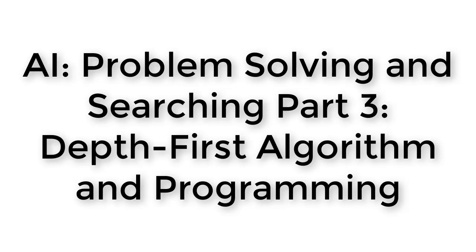In this video, we'll start by learning about the depth-first algorithm. A depth-first algorithm is an online method, meaning that the robot makes a decision, then takes an action, then makes another decision, then takes an action. Also, it's an uninformed method, meaning that the robot does not need to know how far away it is from its goal state in order to make decisions.